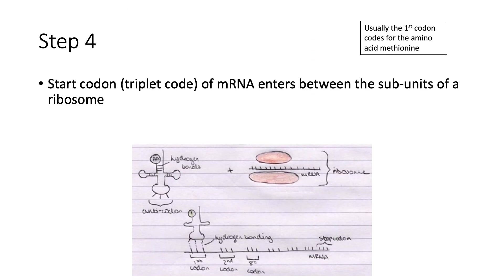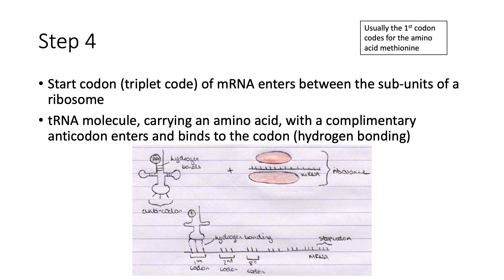As you can see here, the start codon of mRNA enters between the subunits of a ribosome, and a tRNA molecule comes along and temporarily bonds to the codon with its complementary anticodon with hydrogen bonding.